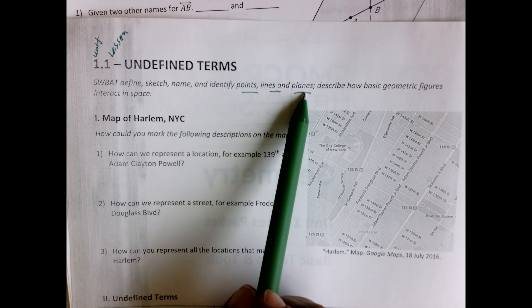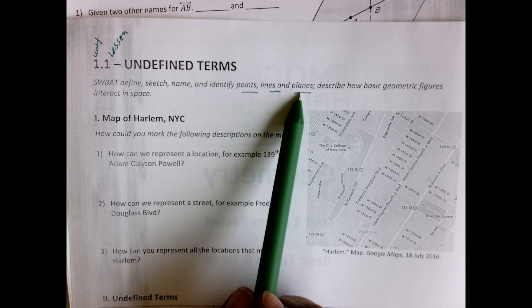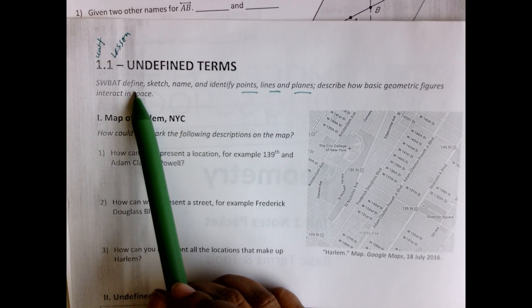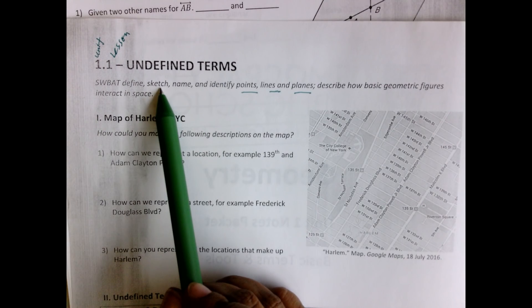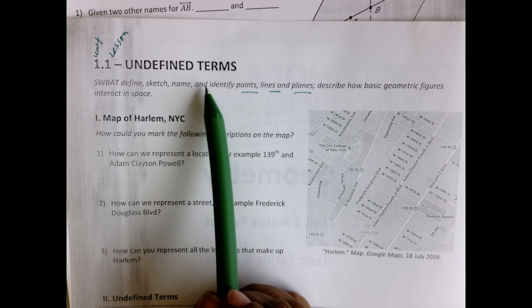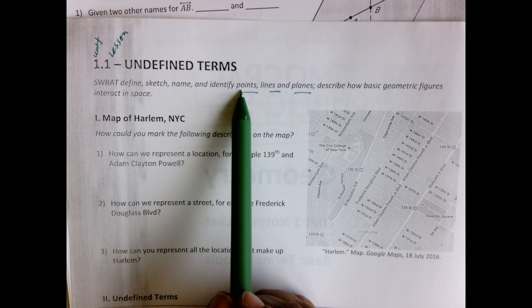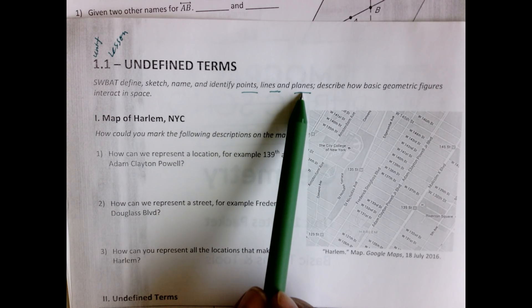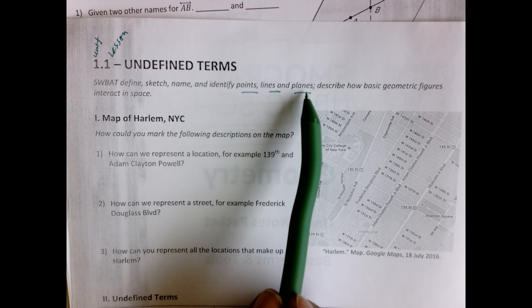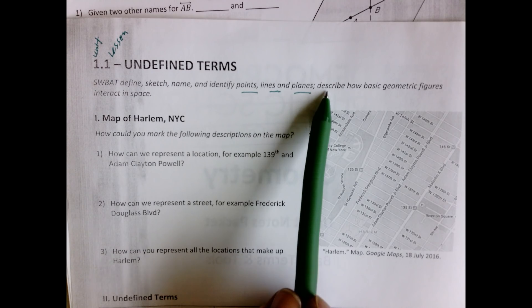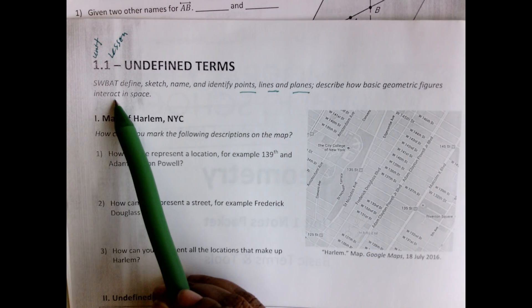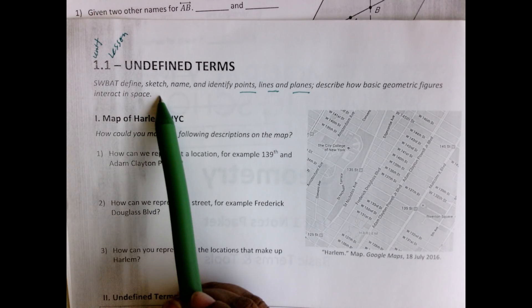For this lesson, the objective is for you to be able to define, sketch, name, and identify points, lines, and planes, and essentially for you to be able to describe them and to describe how these basic figures interact in space.